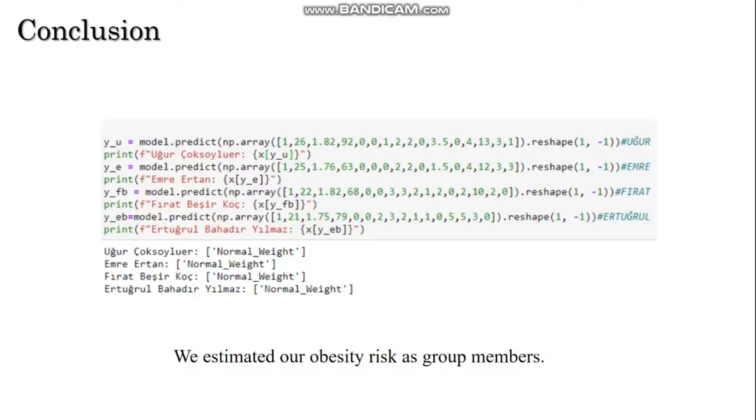Conclusion: The model has a high predictive value for prediction of a person's risk of obesity. For example, we estimate our obesity risk as group members. We tried to find out whether we have obesity risk with the model. As a result, we got an output like above. We are normal weight according to the model. Therefore, we have no risk of obesity. If we enter the wrong values, the model cannot get the correct result for us.